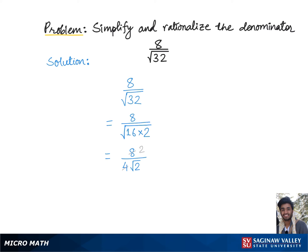To rationalize this new denominator root 2, we need to make the radical 2 a perfect square. We'll do that by multiplying both the top and bottom of the fraction by root 2, so now we have 2 root 2.